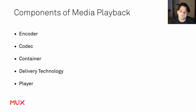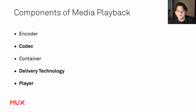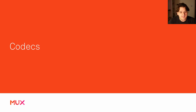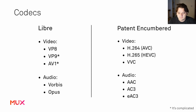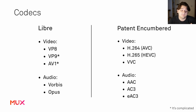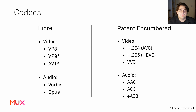Since we're at a front-end conference, I'll focus primarily on the front-end piece of the media playback chain: codec choices, delivery technology, and player choices. The codec choice really informs a lot of the other decisions. You've probably heard of many video codecs — h.264, often referred to as MPEG-4, though MPEG-4 is actually a container format and it's often confused whether it's an MPEG-4 container with h.264 inside.